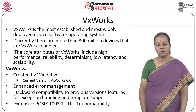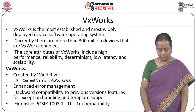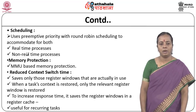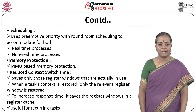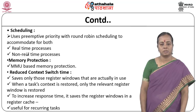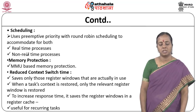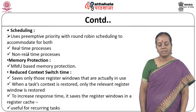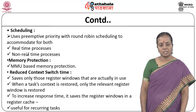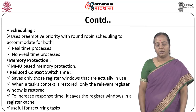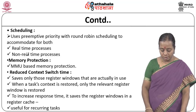VxWorks has POSIX 1003.1b and 1003.1c compatibility. Its scheduling is preemptive priority-based with round-robin, accommodating both real-time and non-real-time processes. Memory protection is MMU-based. Context switch time is negligible — it saves only the register windows actually in use, and restores only the relevant register window, storing register windows in a register cache to increase response time. This makes VxWorks very useful for recurring tasks.